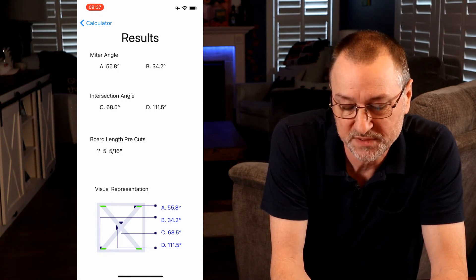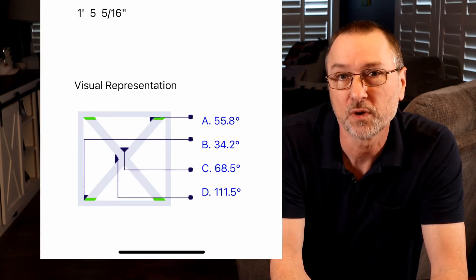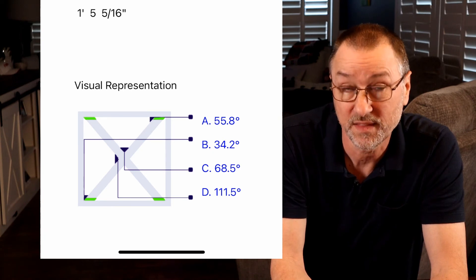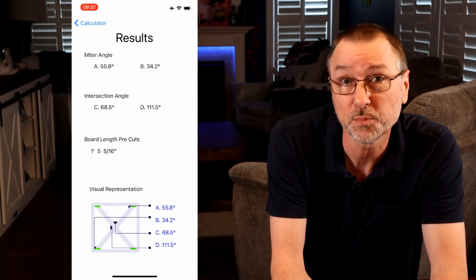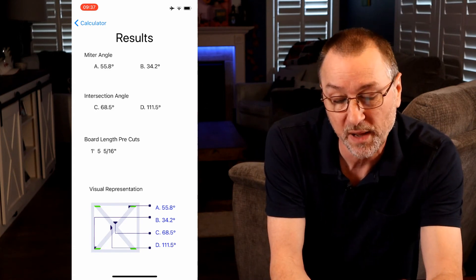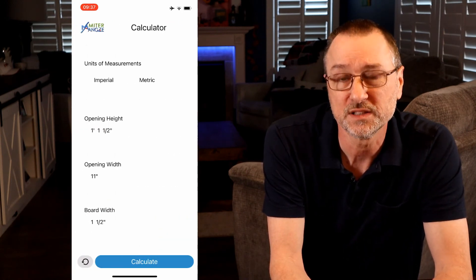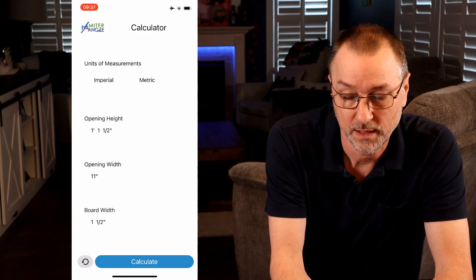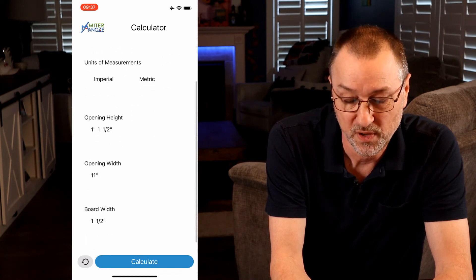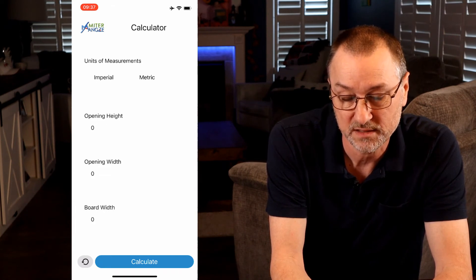At the bottom there's a visual representation. It gives you the angles again — A, B, C, and D — and the exact location of where they're placed on the X. That is it for the Miter Angle calculator. Very simple but very powerful and effective. Now if you want to go back, the upper left there you hit calculator — it goes back and still has your entries in there if you need to adjust or change the board orientation. If you want to clear everything out, the bottom left circular arrow — just click that and you're back to zero. You can start all over.